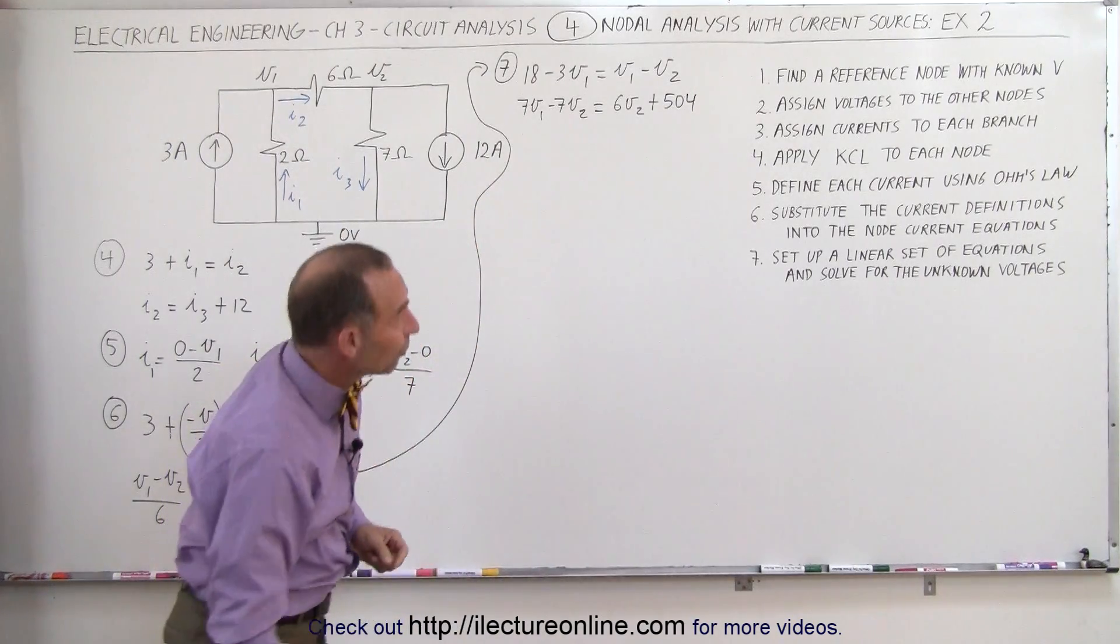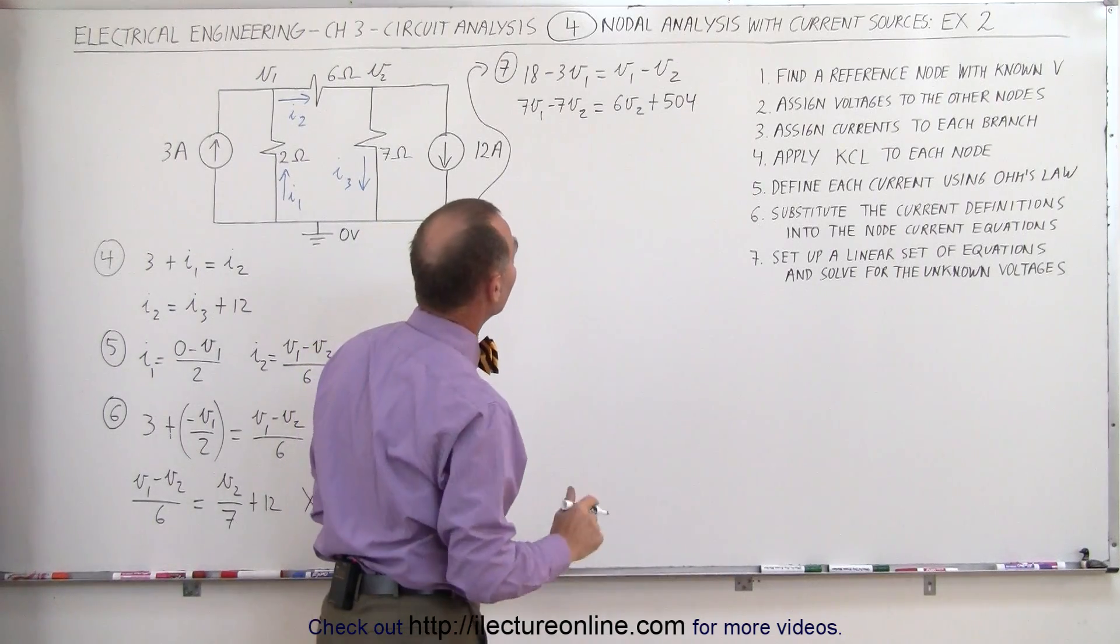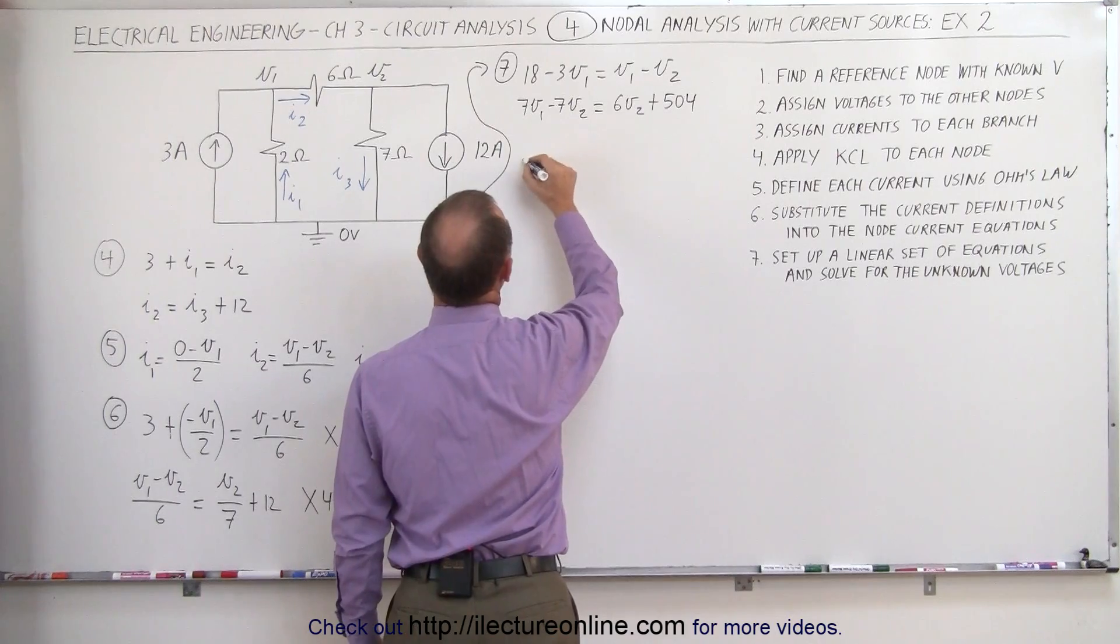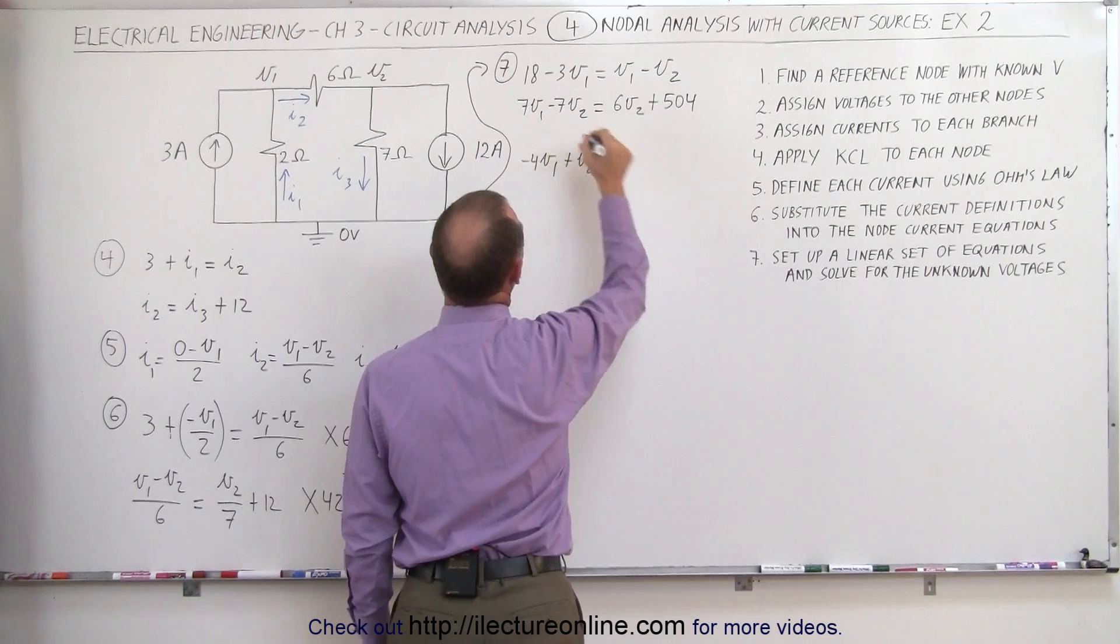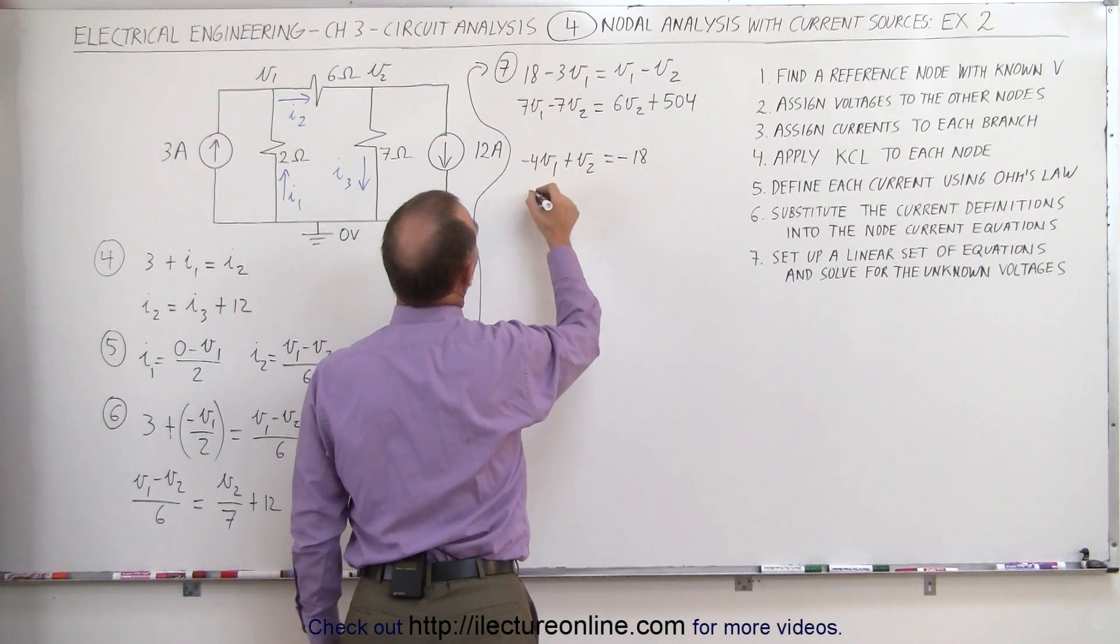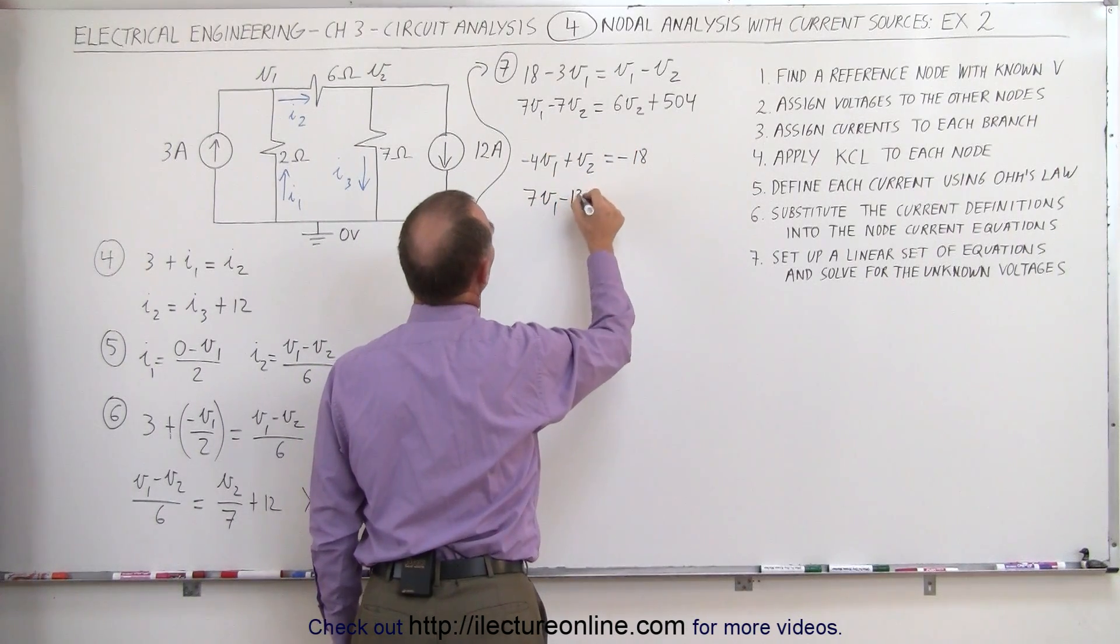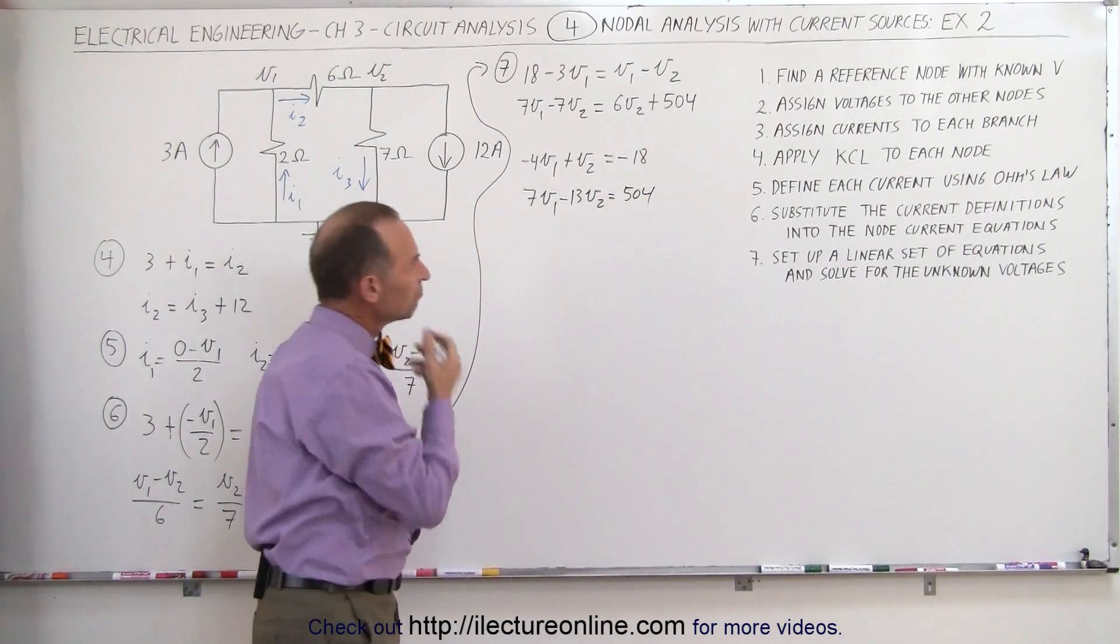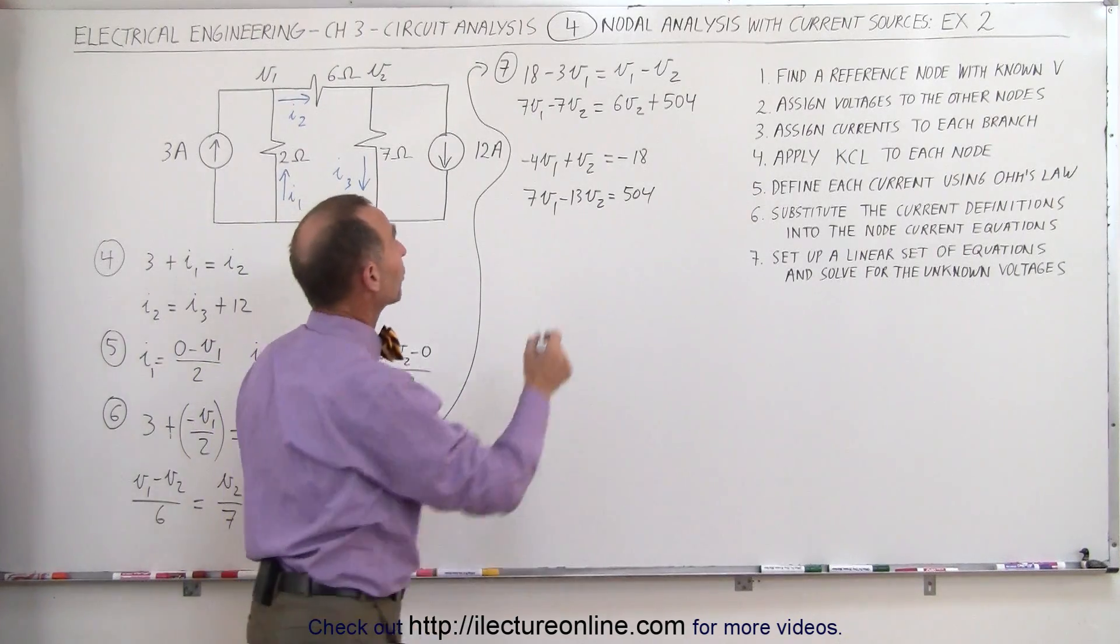Since we want to solve that, we want to set it up in a linear format. All the V's on one side, all the constants on the other side. So moving all the V's to one side, the first equation becomes minus 4 V1 plus V2 equals minus 18. The second equation, we have 7 V1, moving the sixth over here, we get minus 13 V2 equals 504. Let's see here. Yeah, we'll leave it like that. So we have our two equations.